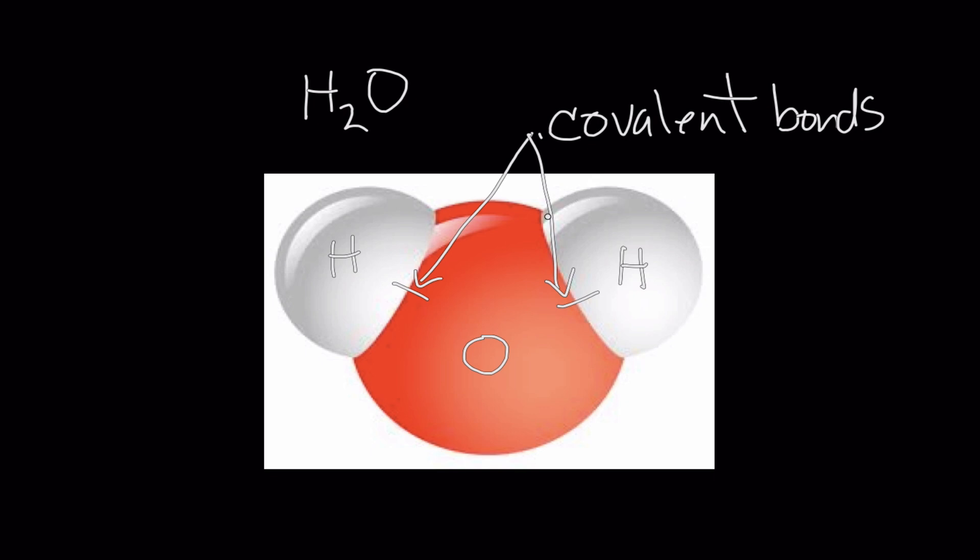What's really interesting is it's an unequal sharing of electrons. The oxygen actually has more control of the electrons than the hydrogen does. This means that it's what we call a polar covalent bond. Polar meaning we get a positive and a negative effect from the unequal sharing of electrons. Remember, electrons are negative. Electrons carry a negative charge and protons carry a positive charge.